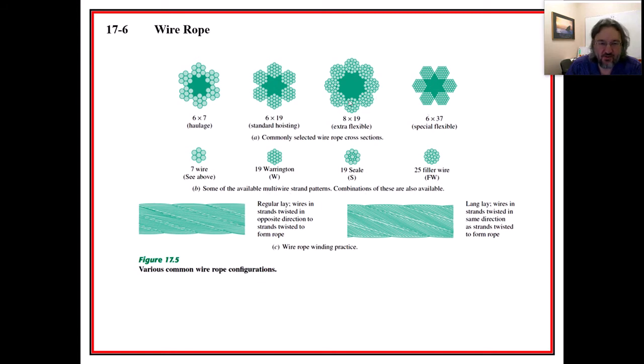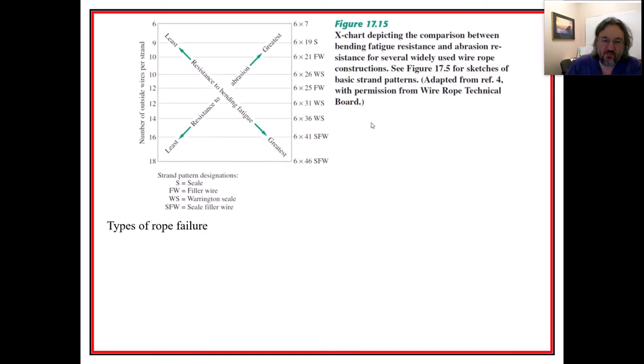So you'll see there's the Warrington, the seal, and the filler wire right here. Some of the available multi-wire strand combinations are also applicable. So there's different patterns, by the way, of the way these strands are connected. And sometimes they have larger and a combination of larger and small wires. And they do try to nestle them in between the gaps, right, to try to fit all these, to fit them in, to minimize the amount of gaps. Another thing I'd also mention is that some of these wires can actually rub against each other ever so slightly.